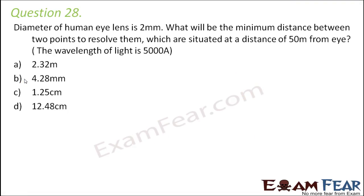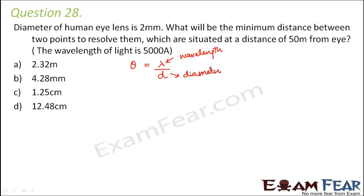Question number 28: The diameter of the human eye lens is 2 mm. What is the minimum distance between two points at 50 m from the eye that can be resolved? The angular limit of resolution is given by θ = λ/d, where λ is the wavelength of light and d is the diameter of the eye lens.